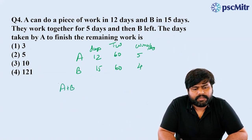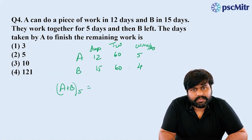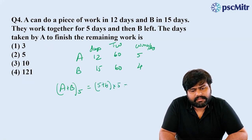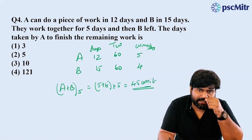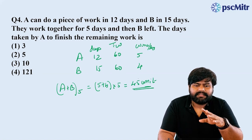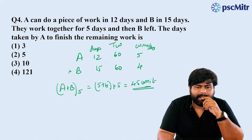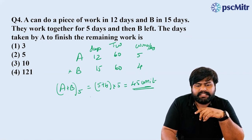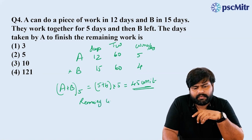Then A and B together in one day: how many units do they complete? 5 plus 4, into 5 days — that gives 45 units already done. Then B is left. Here B does work alone, and the remaining work is 15 units.